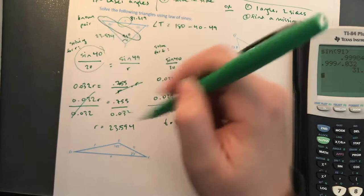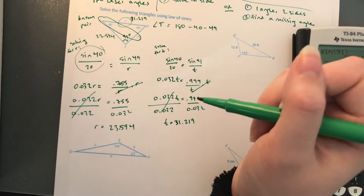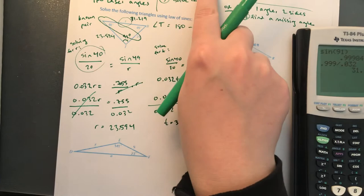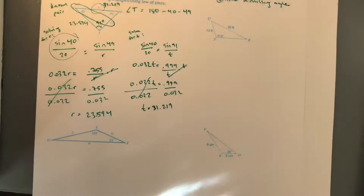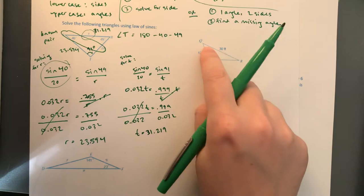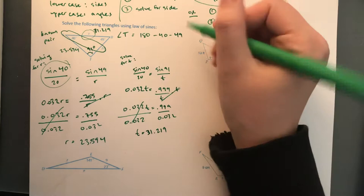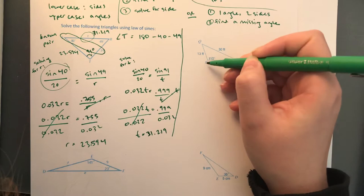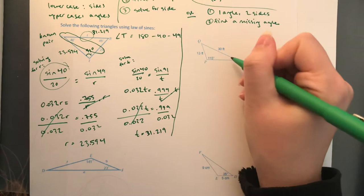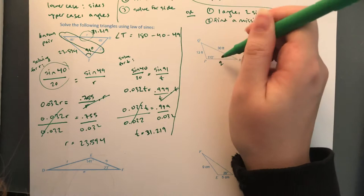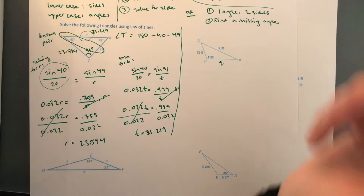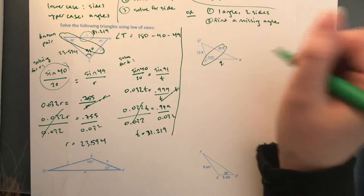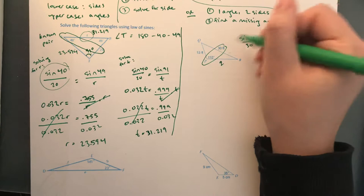By the way, that was a level two problem — the level three problems with word problems are on the next page. That was case one with two angles and one side. This next example is case two where you're given one angle and two sides. If we have two missing angles we can't find the last one directly, so this one requires a bit more work.